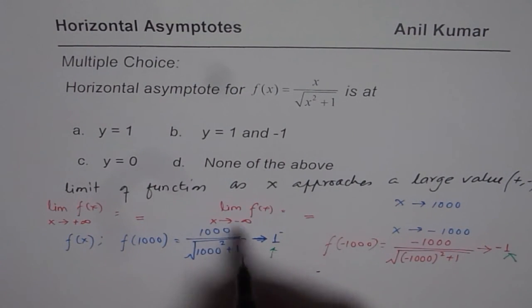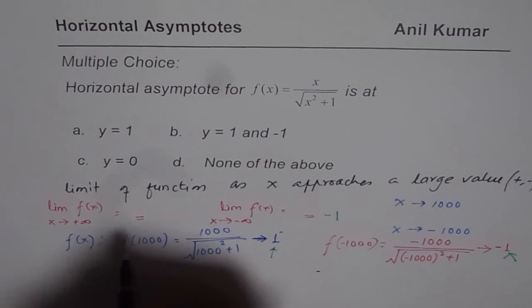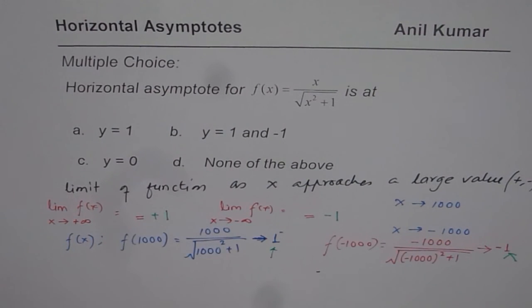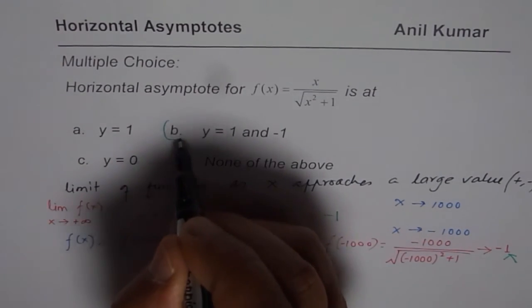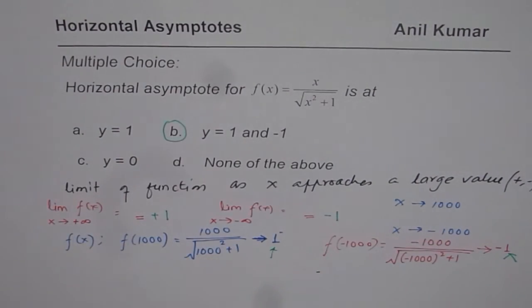So you get negative 1 when you are approaching negative infinity, and it is positive 1 when you are approaching positive infinity, and therefore, y equals 1 and minus 1 is your solution. I hope you get the concept and also a method of finding limits using numbers. That helps. Thank you, and all the best.